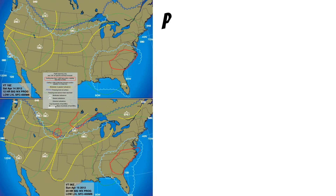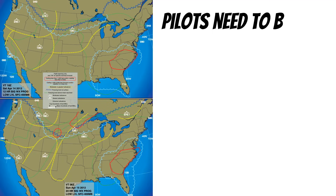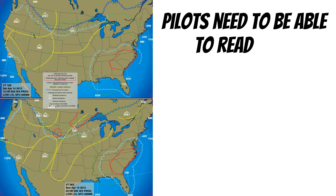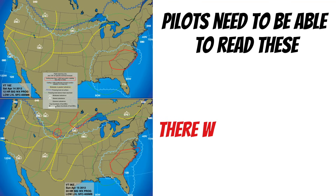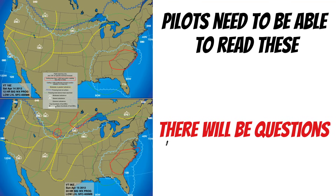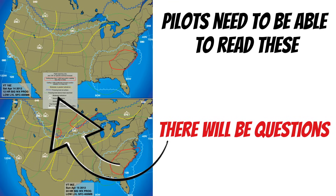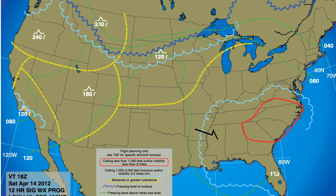Low-level prog charts are something you need to be familiar with as a pilot. Not only will you get asked about these on your written exam, but you should also be able to read them so you can avoid bad weather. And for my private pilot students, these are going to help us determine if we're going to be able to fly VFR.